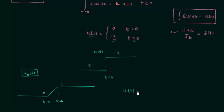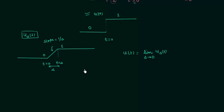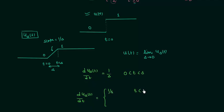The relation between u(t) and u_δ(t) is: u(t) is equal to the limit as δ tends to 0 of u_δ(t). When this duration δ equals 0, u_δ(t) becomes the standard unit step signal. The slope of u_δ(t) is equal to 1/δ when time t is between 0 and δ, and it is equal to 0 elsewhere.